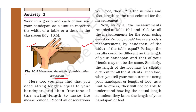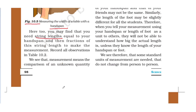Here too, you may find that you need a string's length equal to your hand span, and then a fraction of the string length to complete the measurement. You can also use a string (धागा) instead of the hand span directly. Record any remaining fraction with the string as well. Record all observations in Table 10.2.